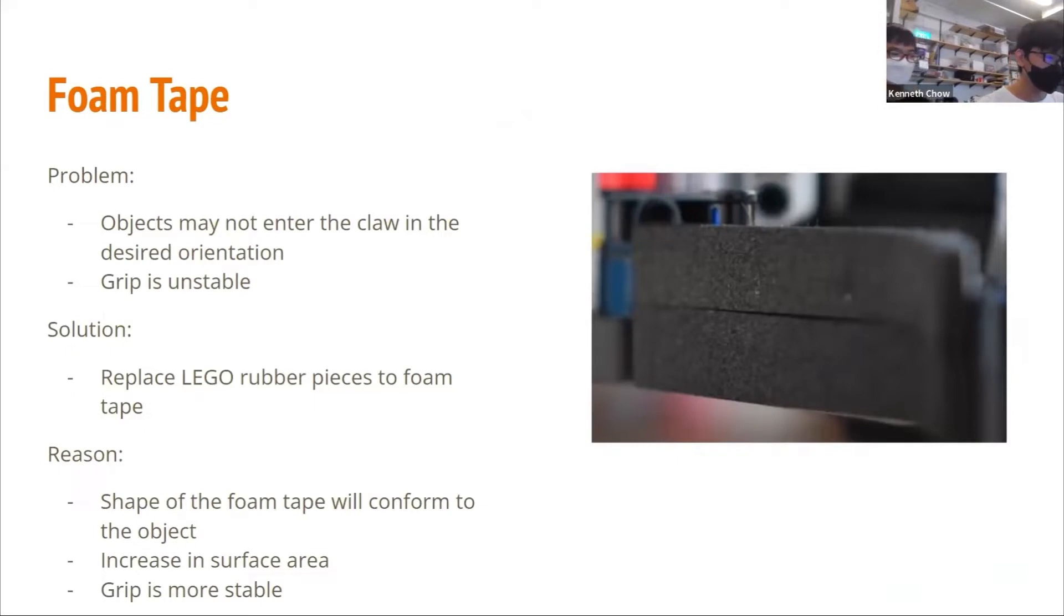The first change we made was to replace our Lego rubber pieces with foam tape. While the rubber pieces would work well when the ball and cube were perfectly centered in the base of the claw, the grip was unstable when the objects were not in the ideal position or orientation. We figured out that the root cause of this was because the objects had different shapes, and using a hard tool would not fit those shapes well. Instead, we should use something that's soft and can adapt itself to fit the shape of the object. We experimented with foam tape and found that the grip is more stable, as it would conform to the shape of the object, increasing the surface area no matter how the object was oriented. With the foam tape, we can now pick up any object regardless of where it is in the claw.